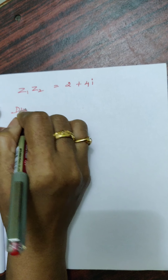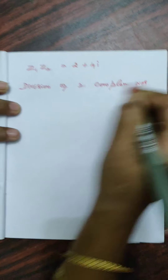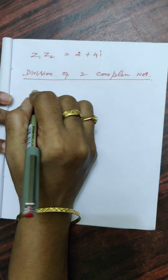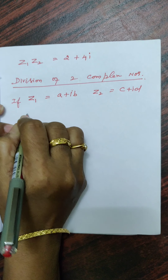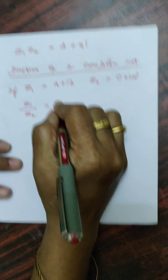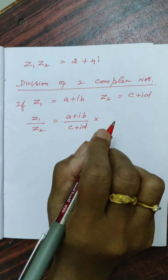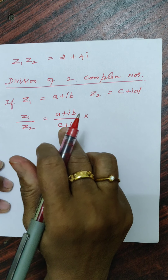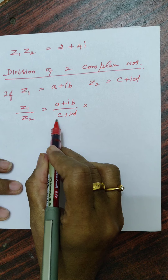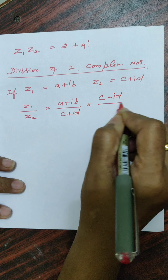Next, how to divide two complex numbers — division of two complex numbers. Let z1 equal to a plus ib and z2 equal to c plus id. I want to divide z1 by z2, which gives a plus ib by c plus id. Here I am going to multiply numerator and denominator by the conjugate of c plus id, which is c minus id. I will explain the conjugate in the next video.